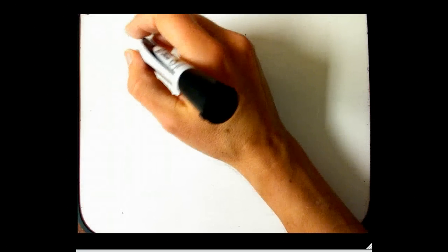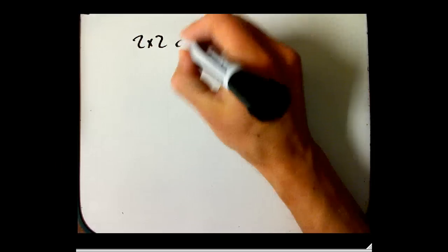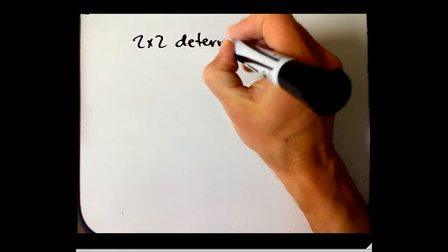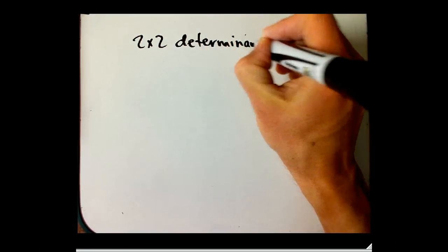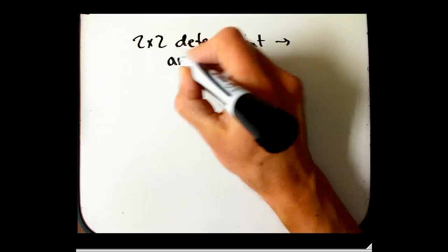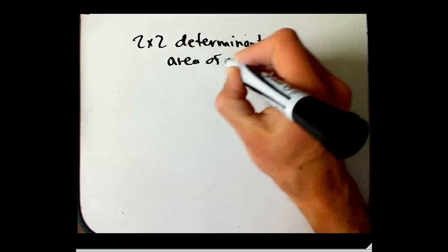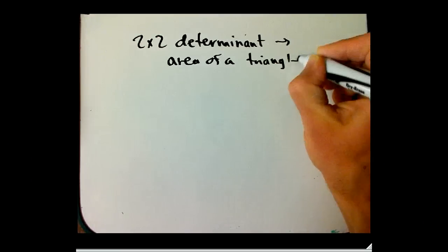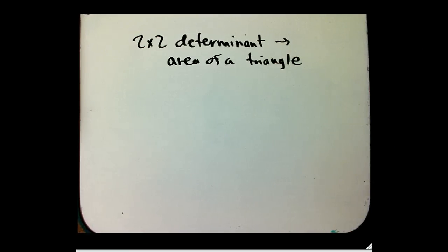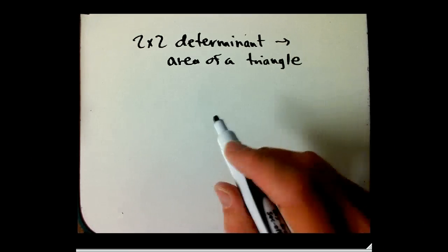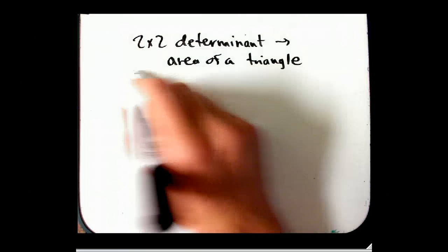Here's a quick example of using a 2 by 2 determinant to get the area of a triangle, and at the end I'm going to contrast that with how our book uses a 3 by 3 determinant, which I think is somewhat misleading when you go further with this stuff.